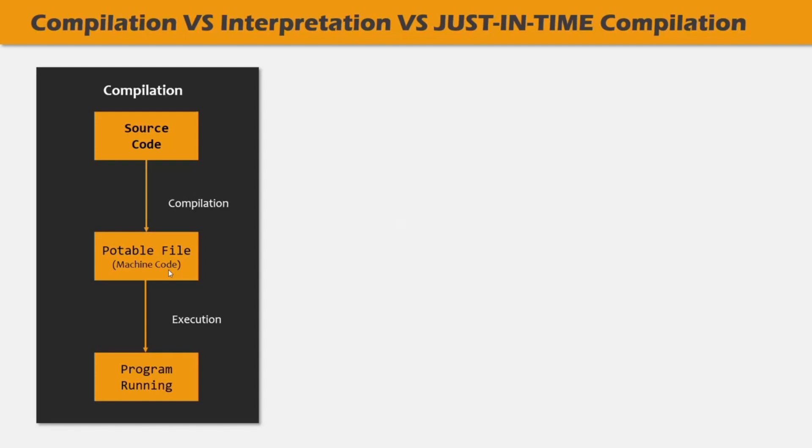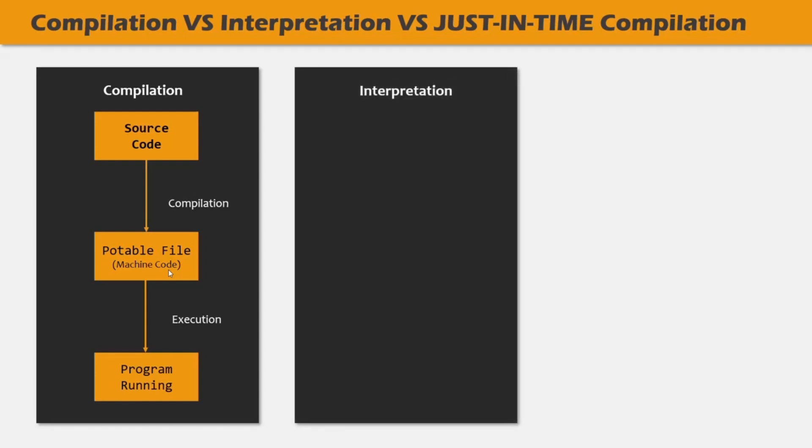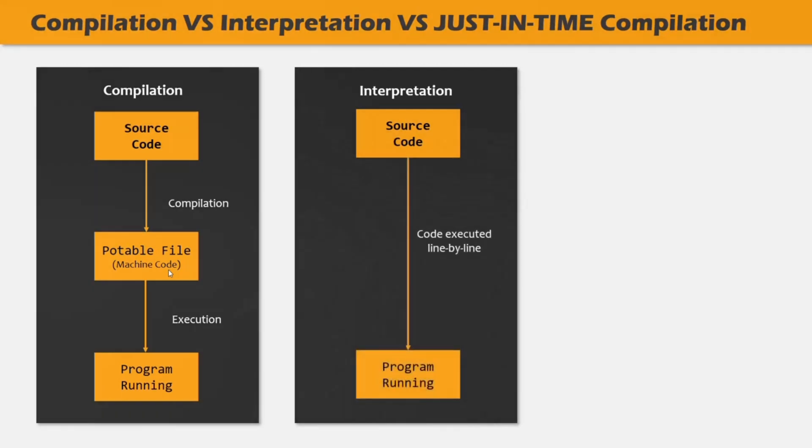We also have another way of converting high-level programming code into machine code, and that is called interpretation. In interpretation, an interpreter is used to convert the source code written in high-level language into machine code. What the interpreter does is run through the source code and execute it line by line. Unlike the compilation process where all source code is converted to machine code at once, in interpretation the code is converted to machine code line by line and not at once. The interpreter runs through the source code and converts and executes the code line by line.